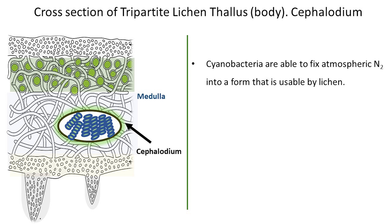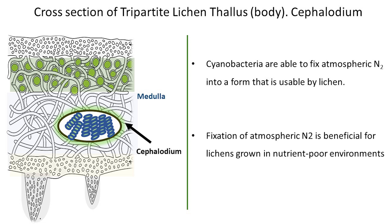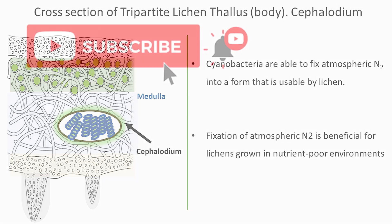This can be particularly beneficial for lichens, as it provides a source of nitrogen in nutrient-poor environments where lichens often grow, such as on rock or bare soil. The fungal partner of the lichen can then access this fixed nitrogen, contributing to the overall nutrient supply of the symbiotic relationship.